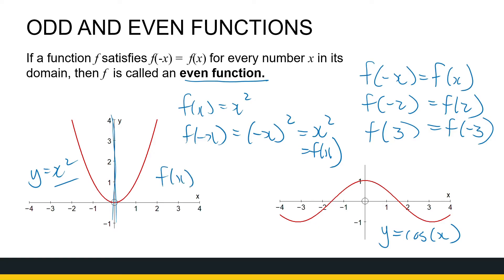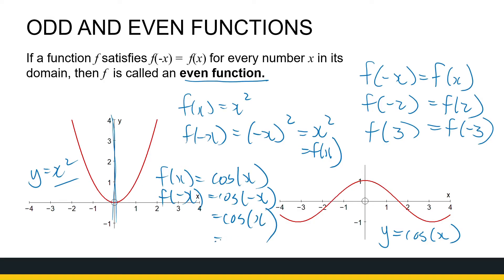What about cos x? If f of x is cos x, then f of minus x is cos of minus x. And from your trig identities, cos of minus x is the same as cos of x, which is just f of x. So both x squared and cos x are even functions because f of minus x equals f of x. Graphically, we see the function graphs are symmetrical around the y-axis.